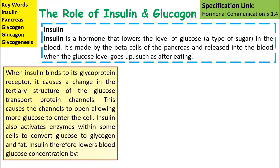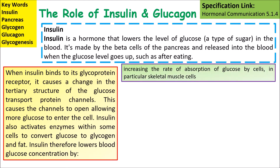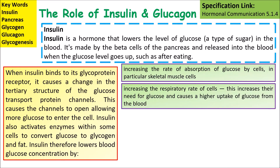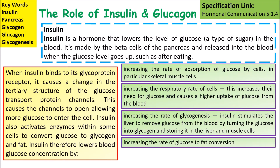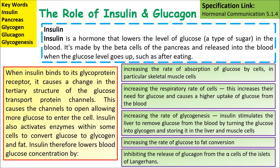Insulin also activates enzymes within some cells to convert glucose into glycogen. It increases the rate of absorption of glucose by cells, increases the respiration rate of cells increasing their need for glucose and causing a higher uptake rate, increases the rate of glycogenesis by stimulating the liver to remove glucose from the blood and store it as glycogen, increases the rate of glucose to fat conversion, and inhibits the release of glucagon from the alpha cells of the islets of Langerhans.